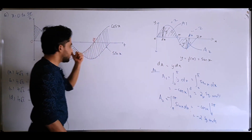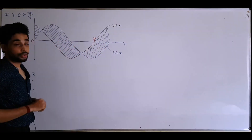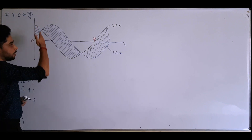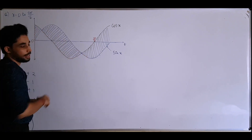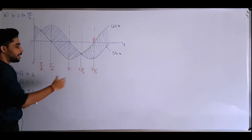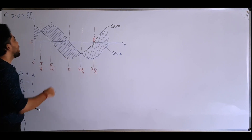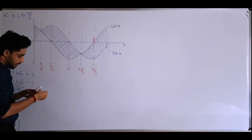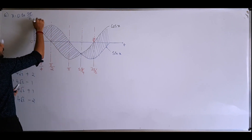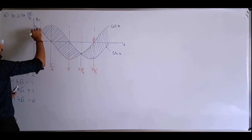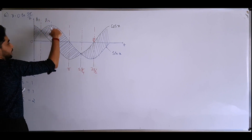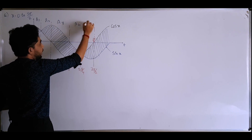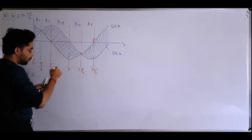Let's come back to our question. I'm going to draw the timeline and divide this into different areas: A1, A2, A3, A4, and A5 — up to A5, because we need the area from 0 to 3π/2.